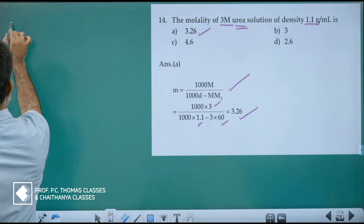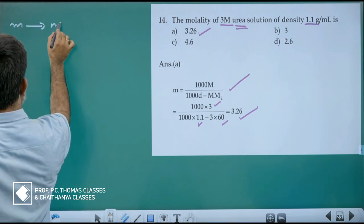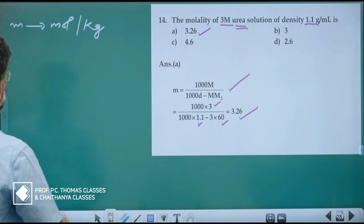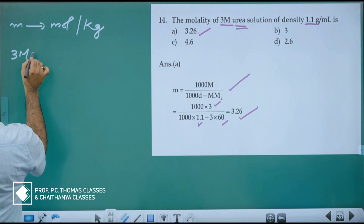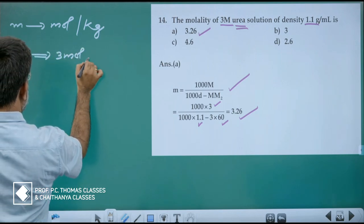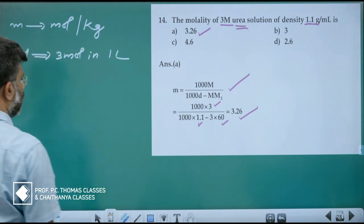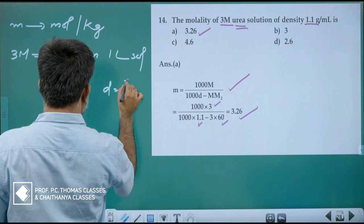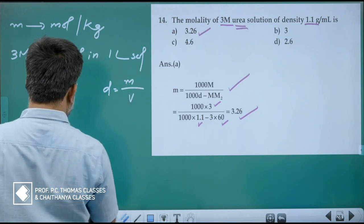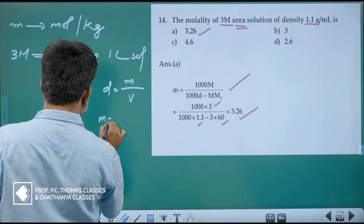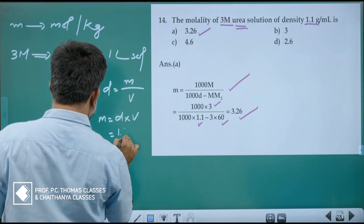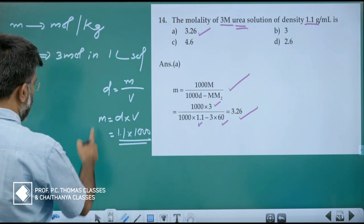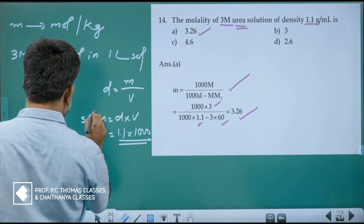Alternatively, think step by step. Molality means moles per kilogram of solvent. Given 3 molar, that means 3 moles in 1 liter of solution. Density of the solution equals mass of solution divided by volume. So mass of solution equals density into volume, which is 1.1 into 1000.